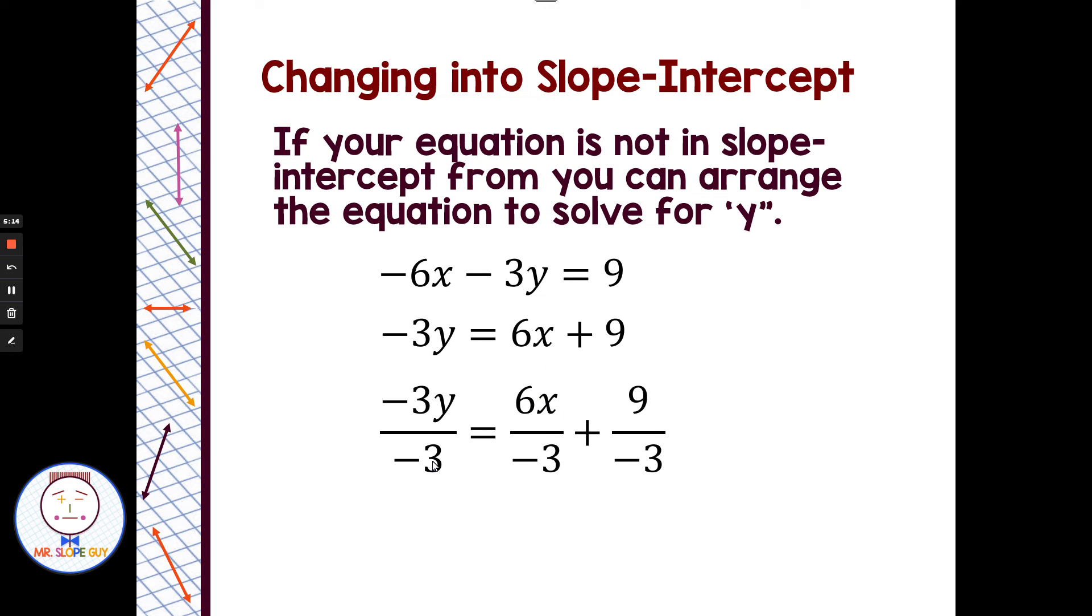Negative 3 divided by negative 3 is just 1y or y. 6x divided by negative 3 is negative 2x. And 9 divided by negative 3 is negative 3. Once I'm in slope intercept form, I'm in y equals negative 2x minus 3. The slope or rate of change is just the number in front of the x, so our slope is negative 2.